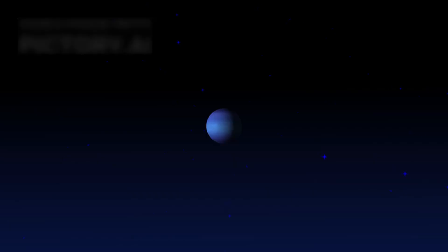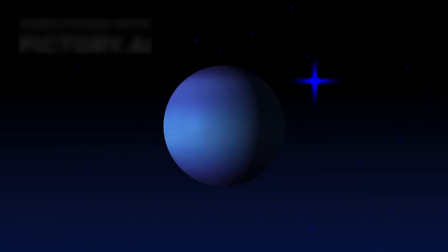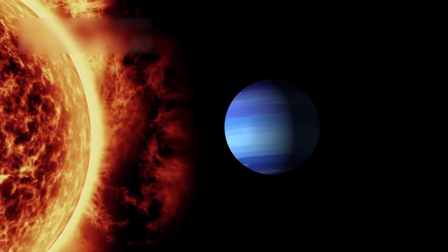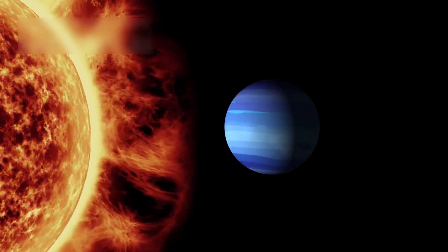By the time it passed Neptune in 1989, Voyager 2 sent us dazzling images of its swirling blue atmosphere. There, scientists noticed the great dark spot, a massive storm similar to Jupiter's red cyclone.